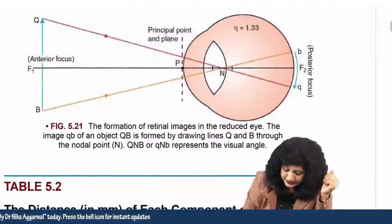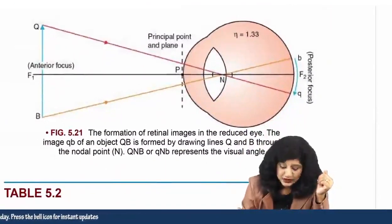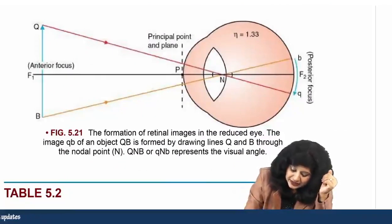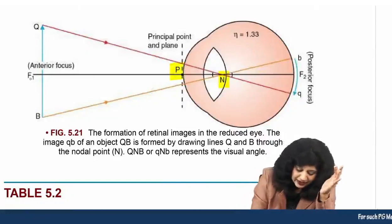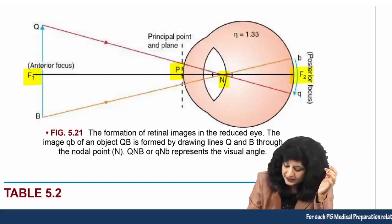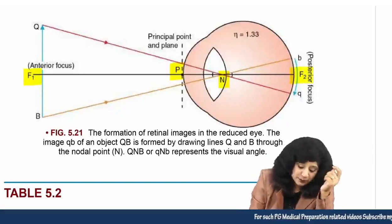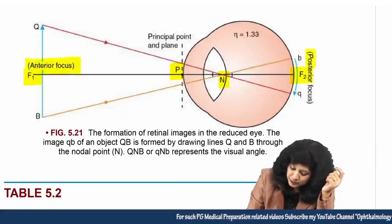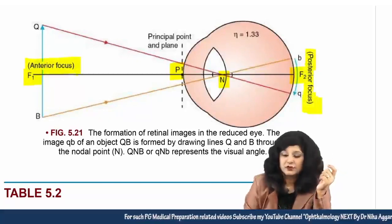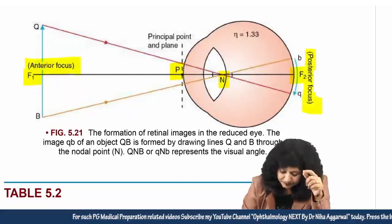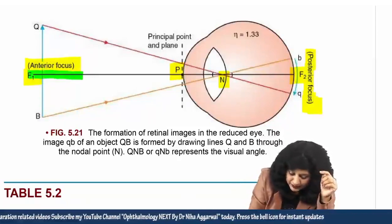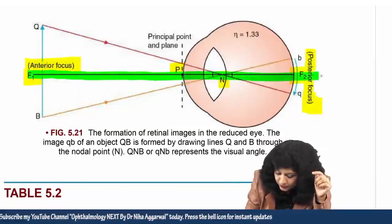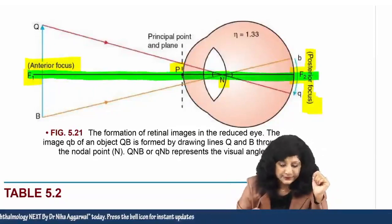In the reduced eye we have taken a single principal point, single nodal point lying in the posterior aspect of the lens, and first and second focal points. The first focal point is the anterior focus and the second is the posterior focus, and all these points pass through a single plane — this is Listing's reduced eye.